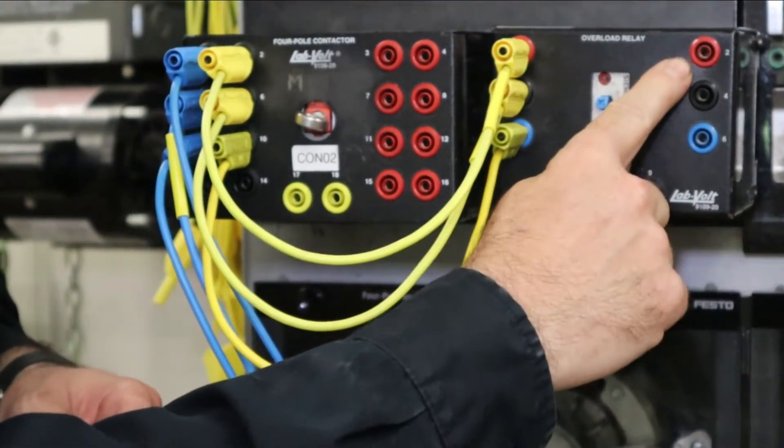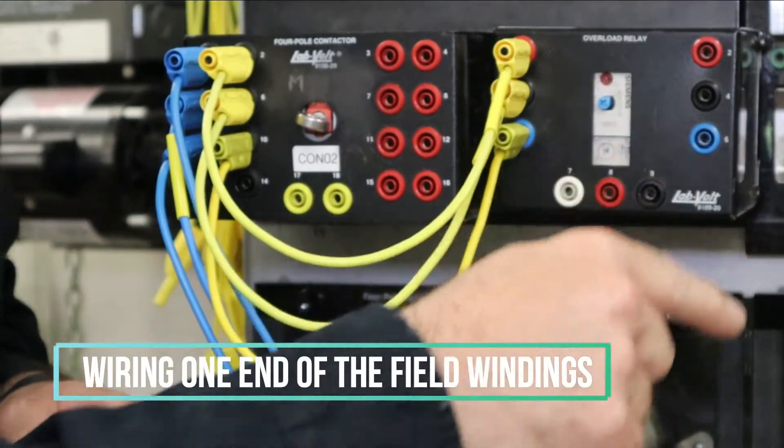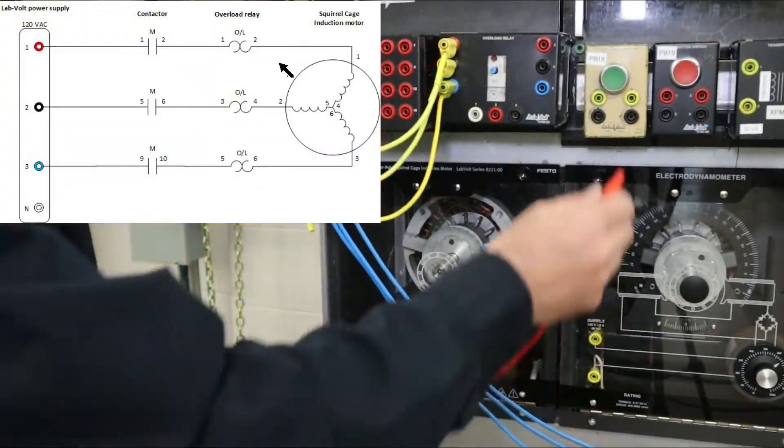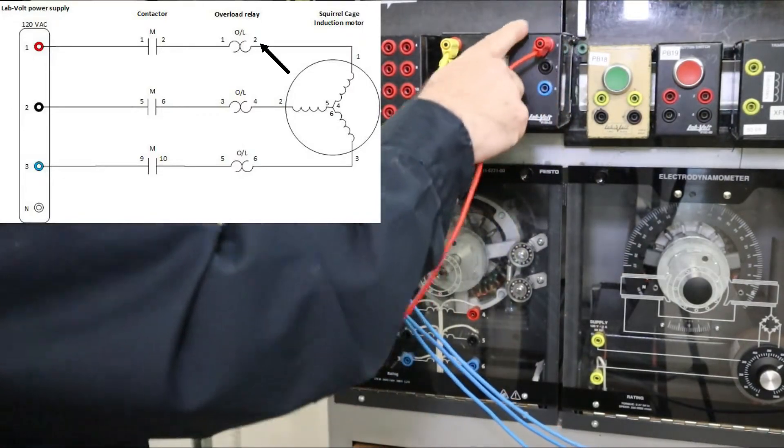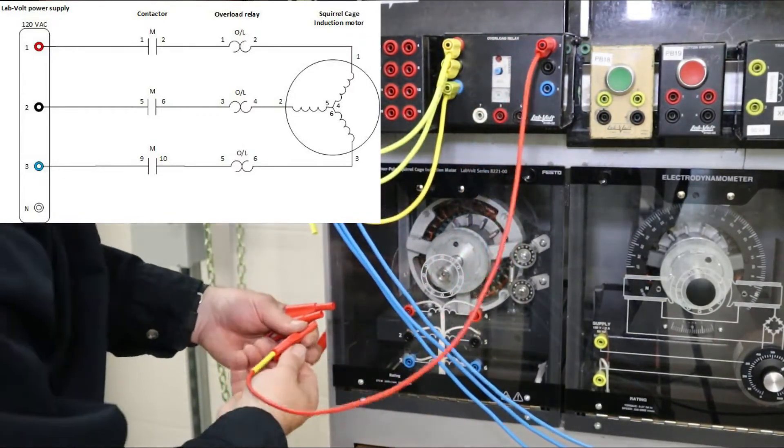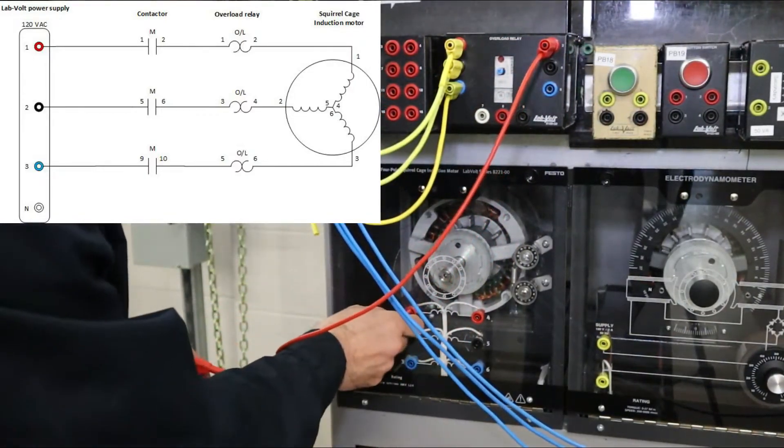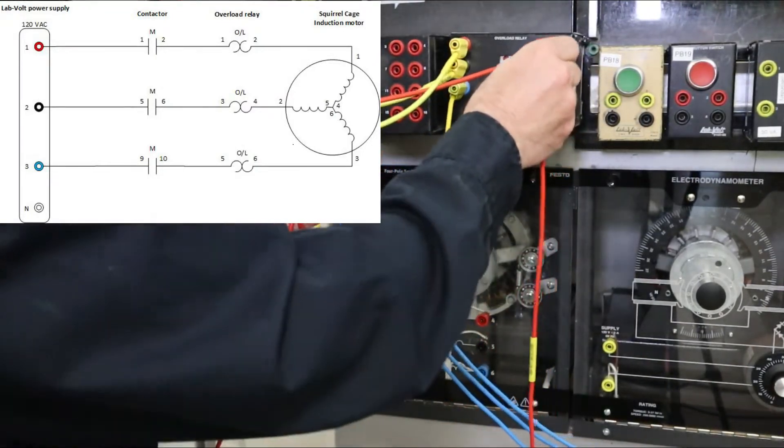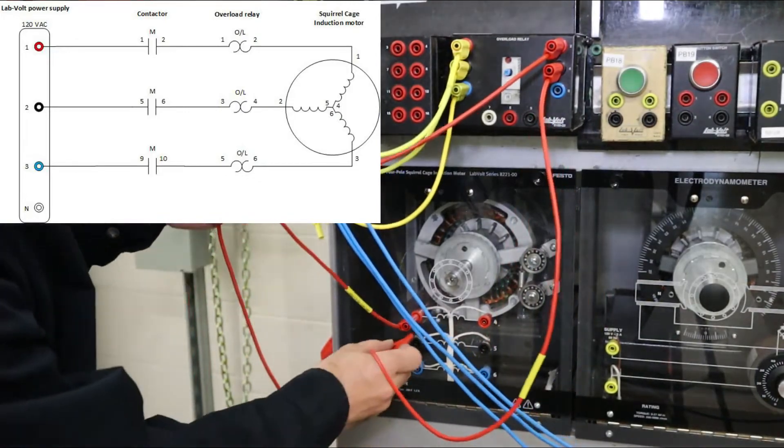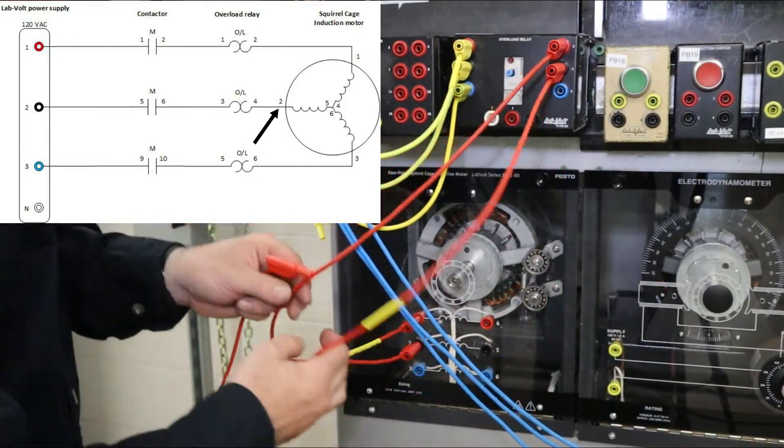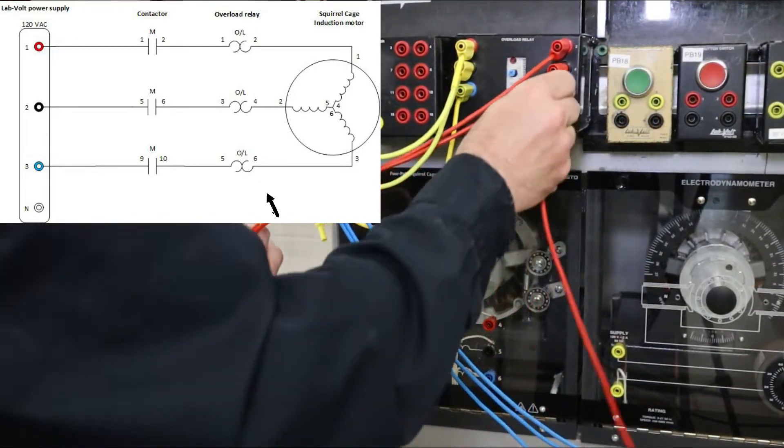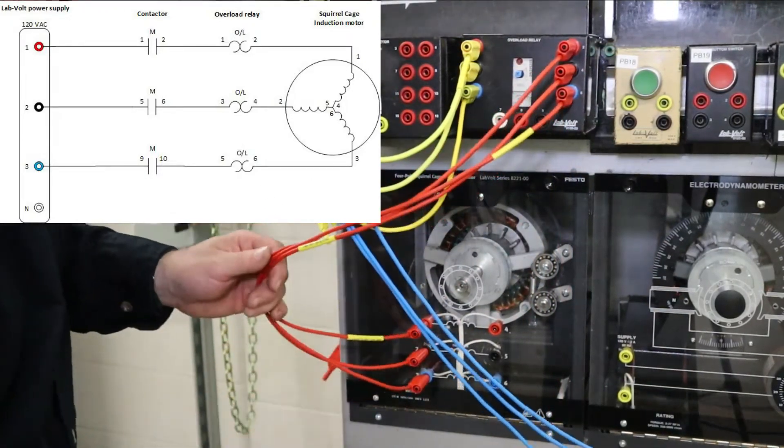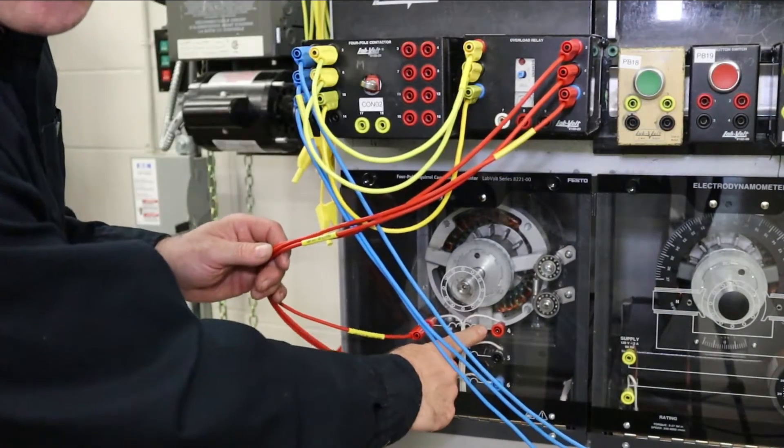All that remains is to add the leads from here down to the motor. From terminal two of the overload relay, or red, to the red phase, the black phase to the black phase, the blue phase to the blue phase. You'll notice right here at the motor...